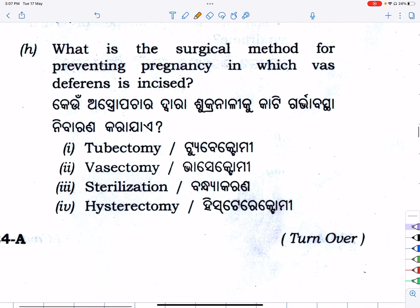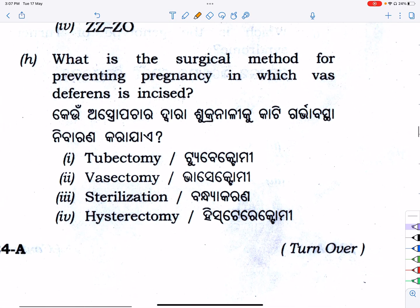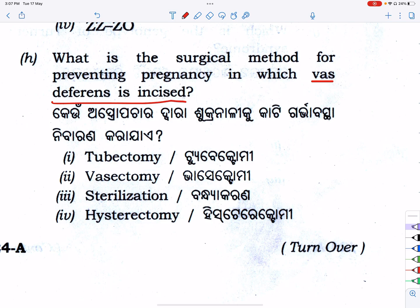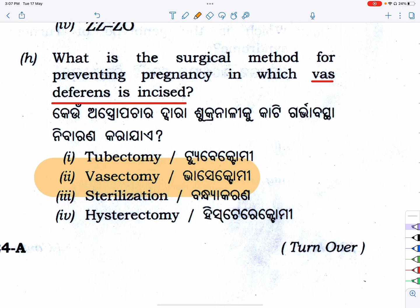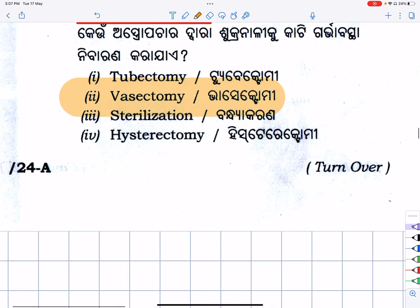What is the surgical method for preventing pregnancy in which the vas deferens is cut? The vas deferens is cut — that is vasectomy. This is the surgical contraceptive method.